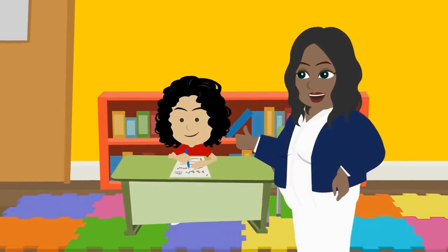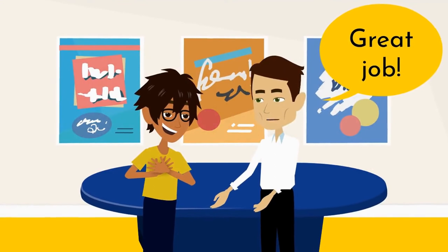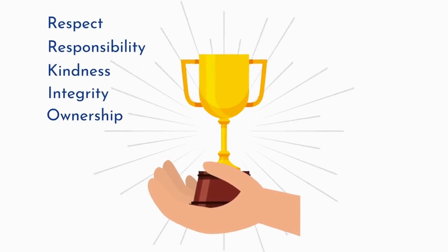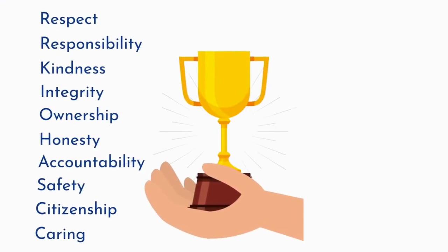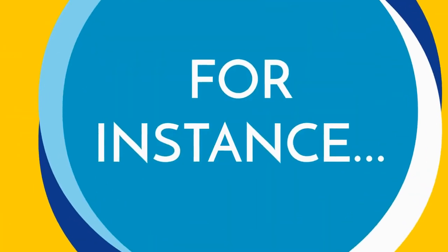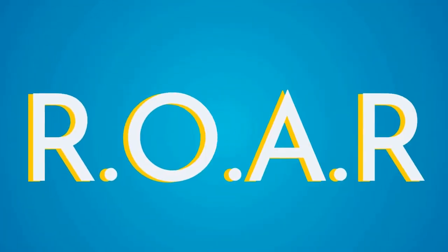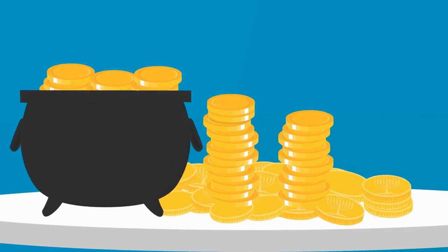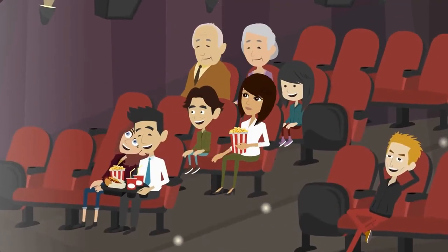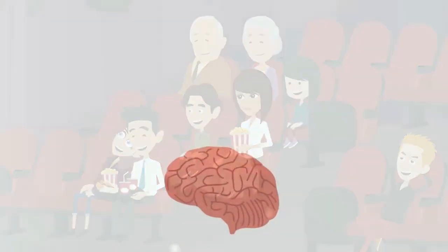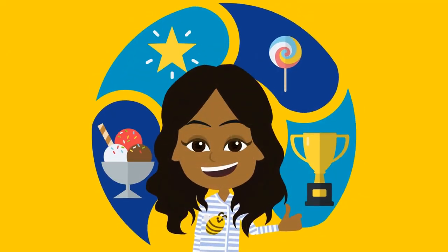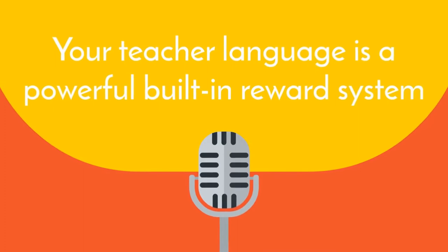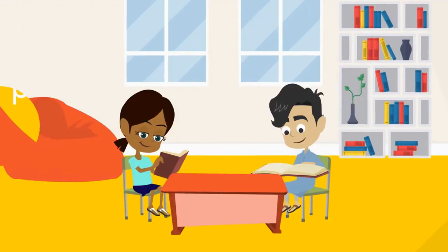You'll also want to come up with a system for positively reinforcing these expected behaviors on a daily basis. Some schools opt to expand upon their selected character traits by connecting them to a chosen reward system. For instance, the school that adopted ROAR as their acronym uses a dragon as their mascot and rewards kids with golden coins to fill their cauldron, inspired by the movie How to Train Your Dragon.